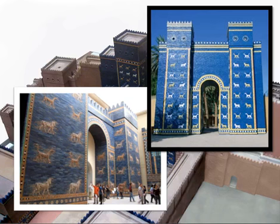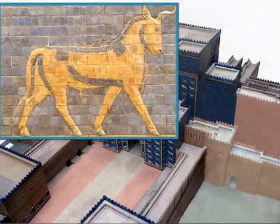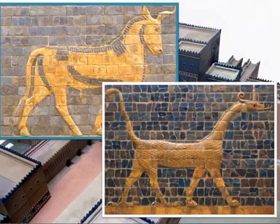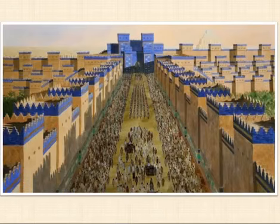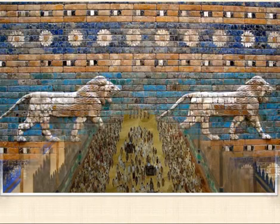Another major work of ancient Babylon is the Ishtar Gate, which was commissioned by King Nebuchadnezzar II in approximately 575 BCE. Dedicated to the Babylonian goddess Ishtar, the gate was constructed as part of a major project to beautify the city. Artisans covered it in glazed brick with alternating rows of aurochs, which are an extinct type of cattle, and dragons. The gate was on the northern side of the city, and through it was a processional way. Every New Year's Day, statues of the Babylonian gods and goddesses were paraded through the gate and down the processional way. The way was lined with walls covered in lines of glazed bricks.